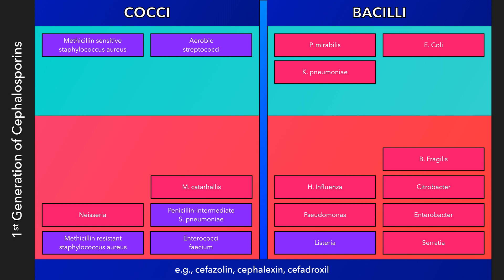Activity against other types of organisms, such as anaerobes, intracellular bacteria, and spirochetes, is poor. It is also important to note that none of the first-generation cephalosporins sufficiently cross the blood-brain barrier and thus cannot be used for meningitis and other CNS infections.